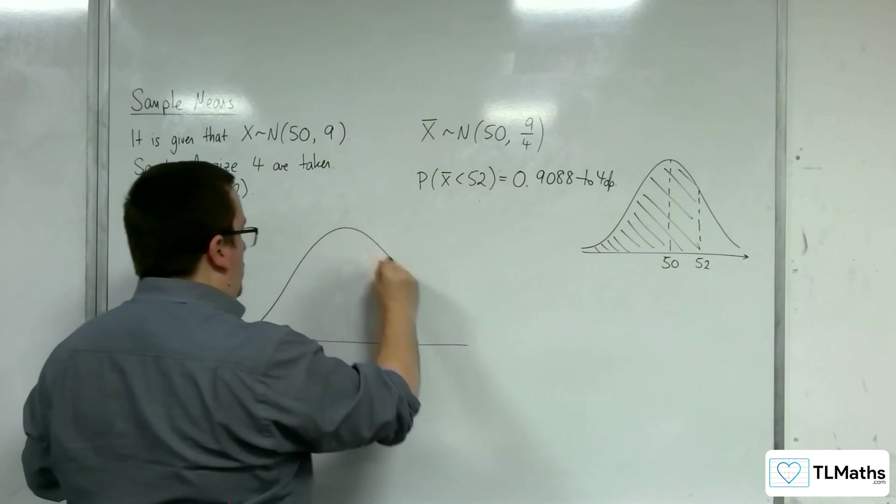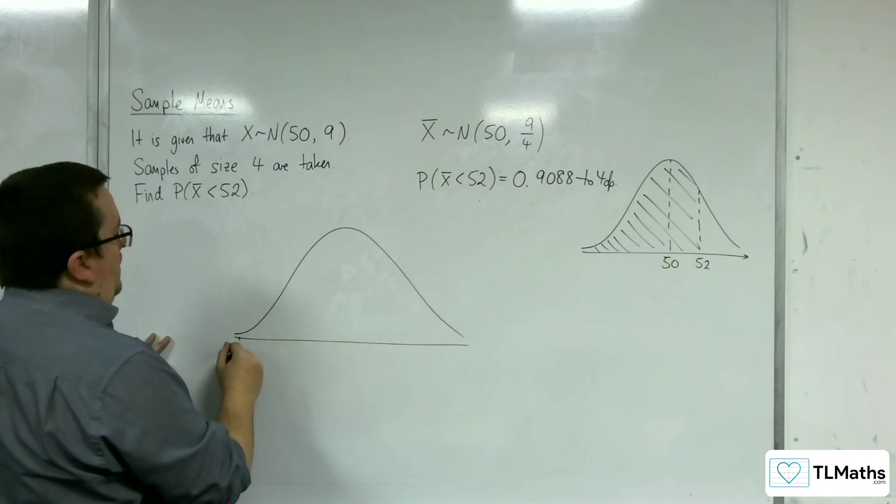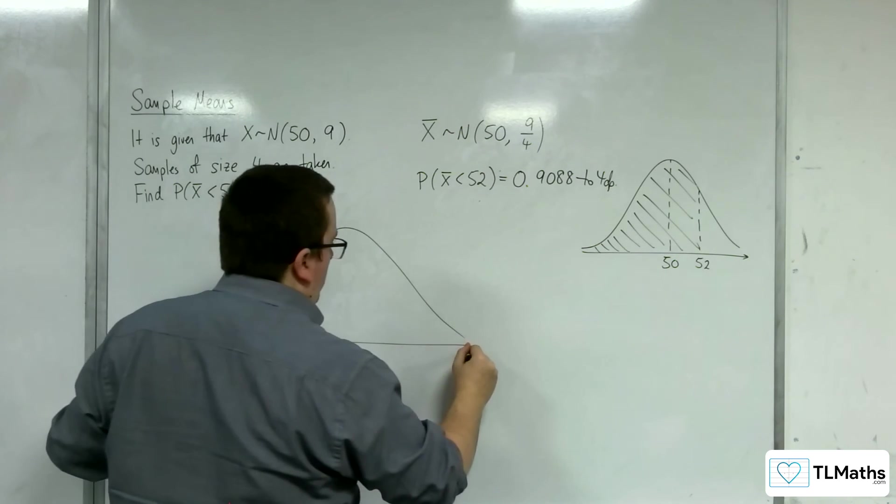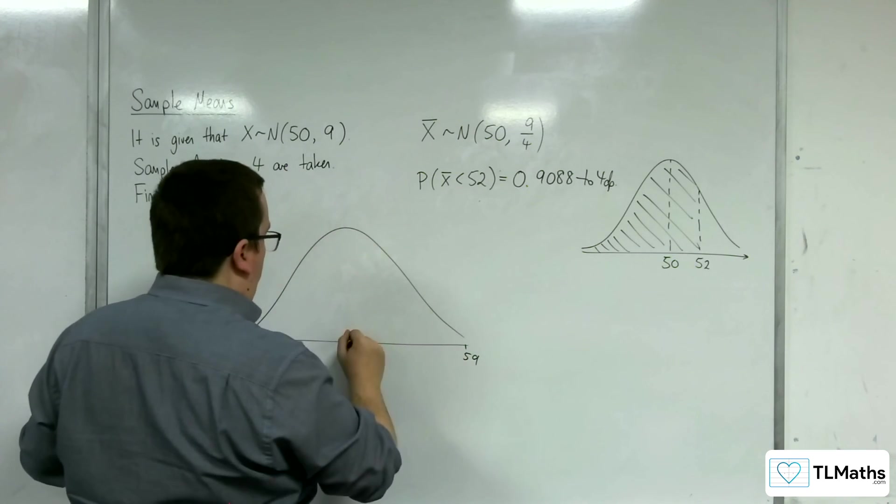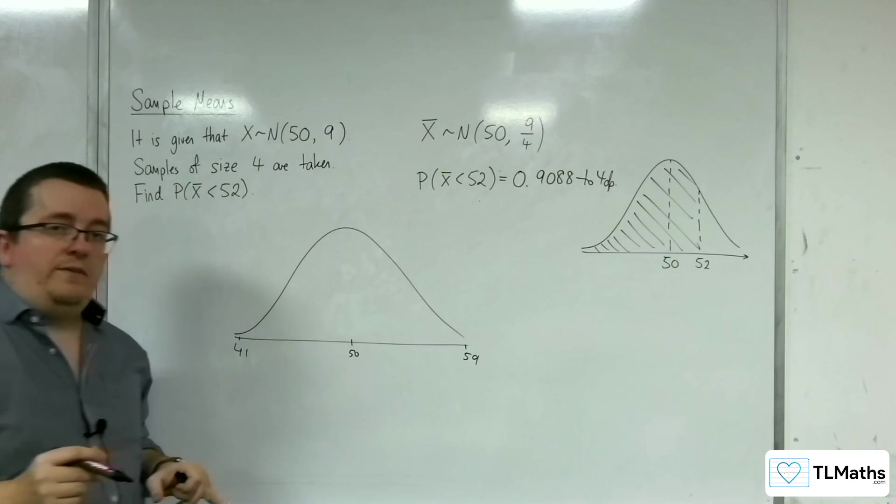Here's my distribution. That's the population. That's about 41. That's about 59. So 3 standard deviations either side.